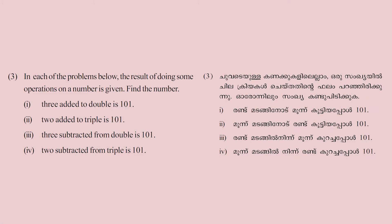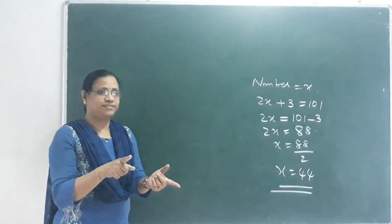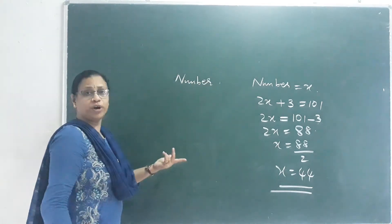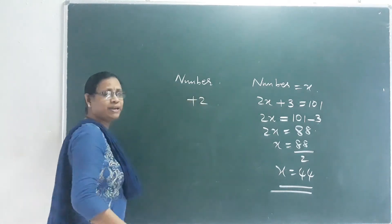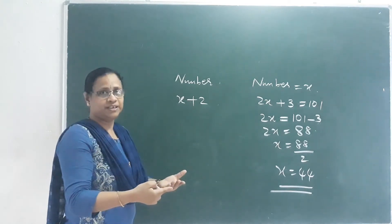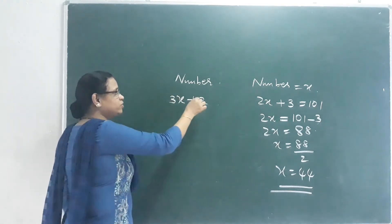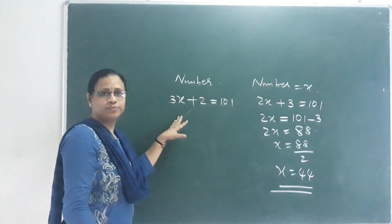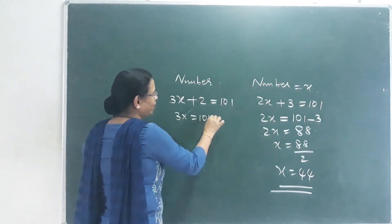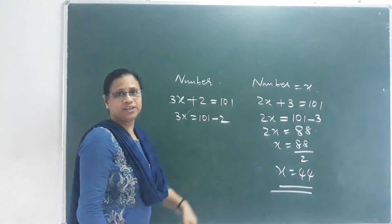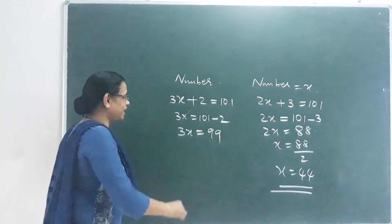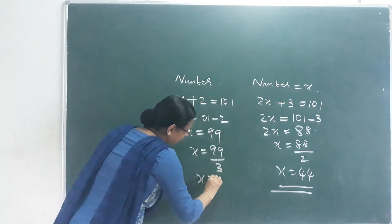Next question: 2 added to the triple of a number is 101. The triple of x is 3x. So the equation is 3x plus 2 equals 101. Then 3x equals 101 minus 2, which is 99. x equals 99 by 3, so x equals 33.